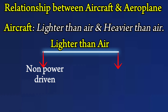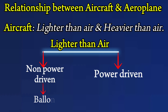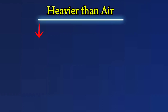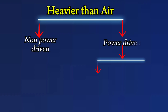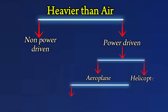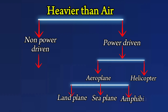Lighter-than-air aircraft can be non-power driven or power driven. Non-power driven examples include balloons, while power driven examples include airships. Heavier-than-air aircraft can also be non-power driven or power driven, including aeroplanes, helicopters, landplanes, seaplanes, amphibians, and gliders.